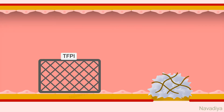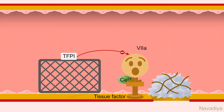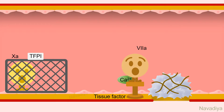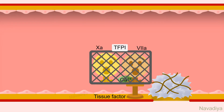Next is tissue factor pathway inhibitor. It is found in plasma and on endothelial cells. It inhibits factor 7A in the tissue factor–factor 7A calcium complex of the extrinsic pathway. This is done in two steps: first it inhibits factor 10, and then this complex of tissue factor pathway inhibitor and factor 10 inhibits factor 7.